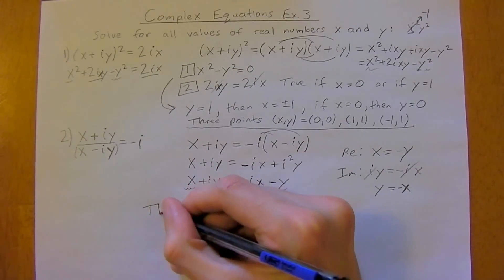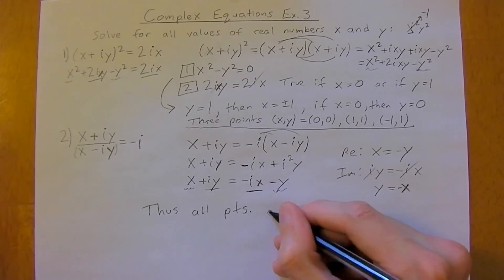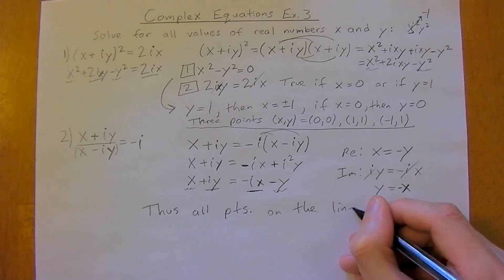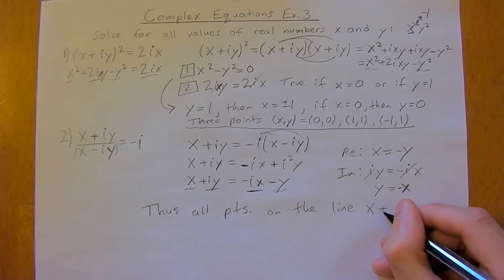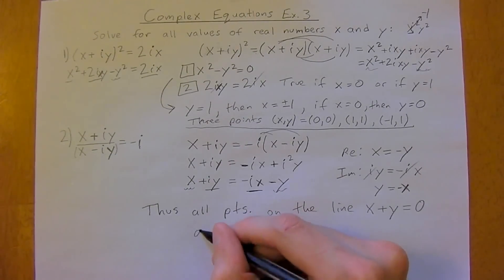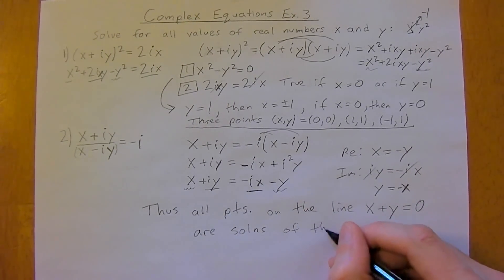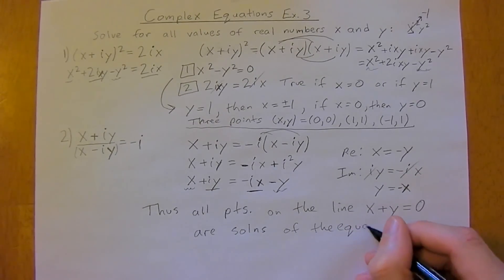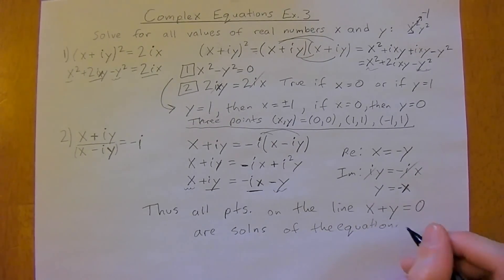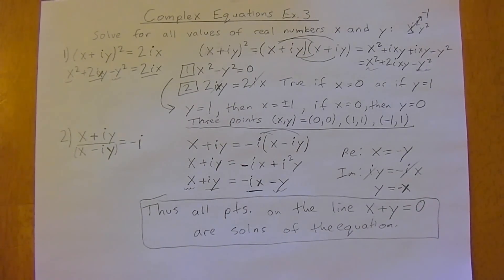The imaginary parts give us IY equals negative IX, so the I's cancel and we have Y equals negative X. Thus, all points on the line X plus Y equals 0 are solutions of the equation. That's our final answer. Hopefully this has been helpful — if you have any questions or comments, please feel free to ask. Thank you, and have an excellent day.